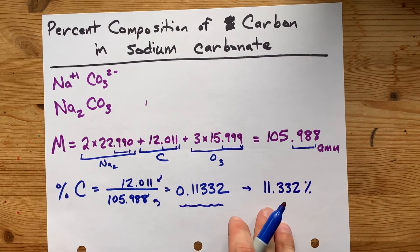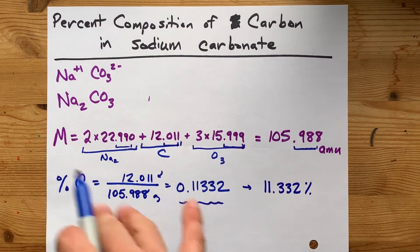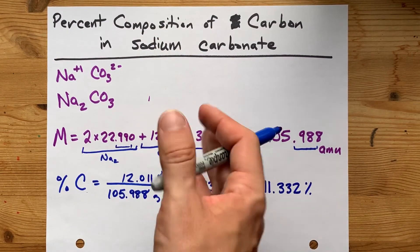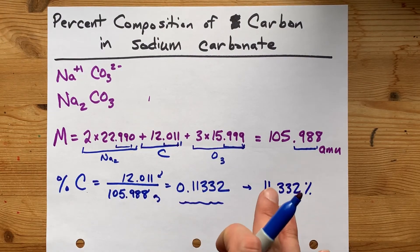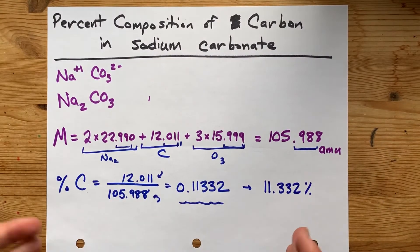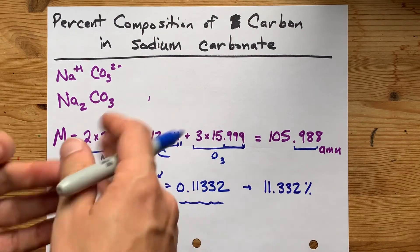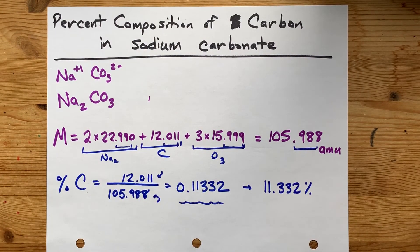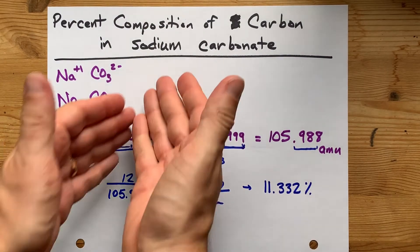Which means that 11% of the entire unit or molecule, although it's not a molecule, it's a formula unit because it's ionic, 11% of its total mass is carbon. A bunch of it is sodium, a bunch of it is oxygen, a paltry 11% is carbon. But that's the question you were asked.